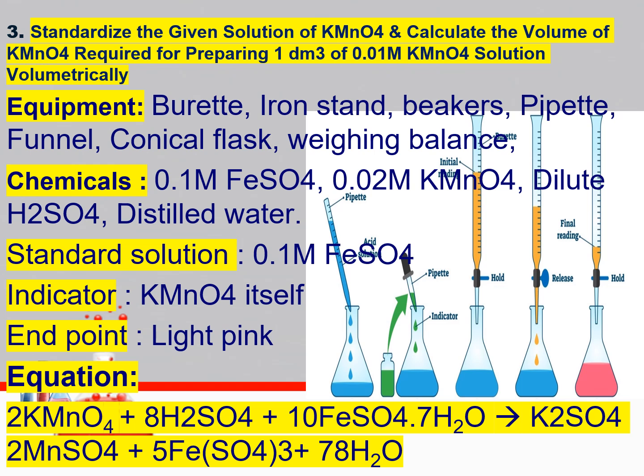The indicator: KMnO4 itself acts as the indicator, and the endpoint color will be light pink. Important — you must memorize this equation: 2 KMnO4 + 8 H2SO4 + 10 FeSO4·7H2O → K2SO4 + MnSO4 + 5 Fe2(SO4)3 + 8 H2O.